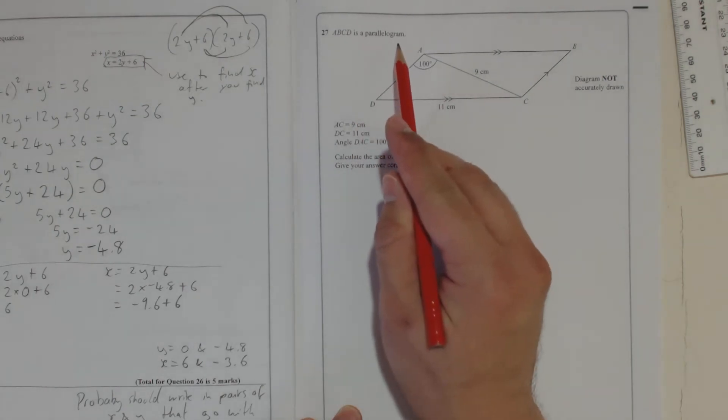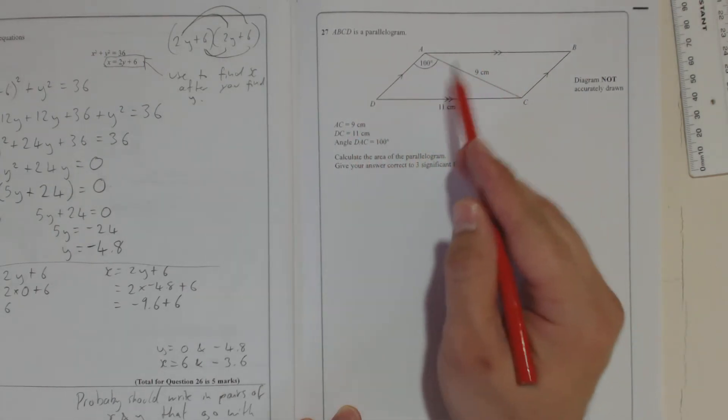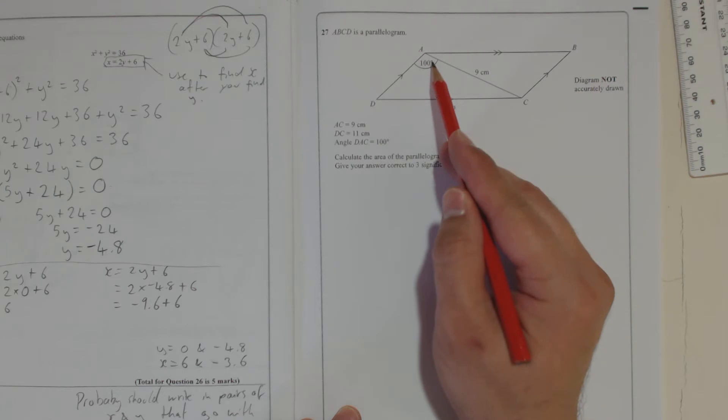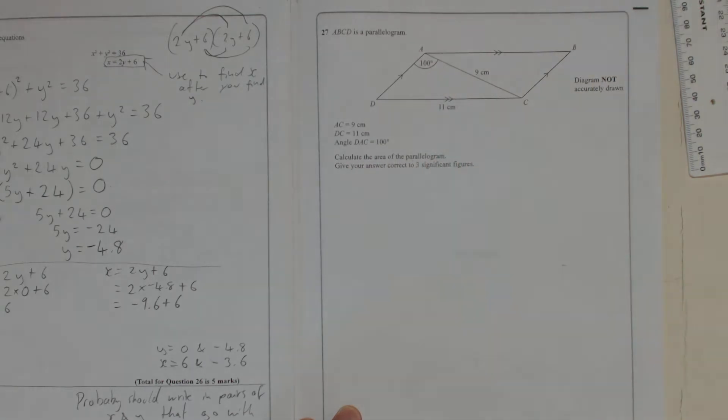Now, back to question 27. ABCD is a parallelogram. AC is 9 centimeters, DC is 11 centimeters, angle DAC is 100. Calculate the area of the parallelogram. Give your answer correct to three significant figures. Don't forget that.